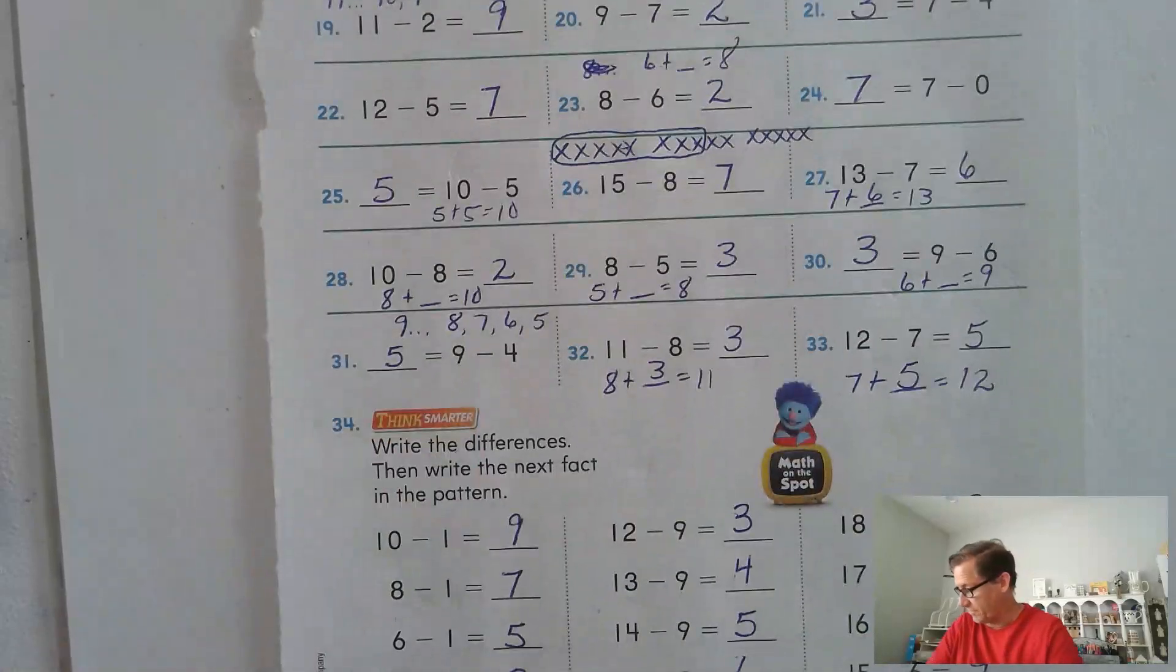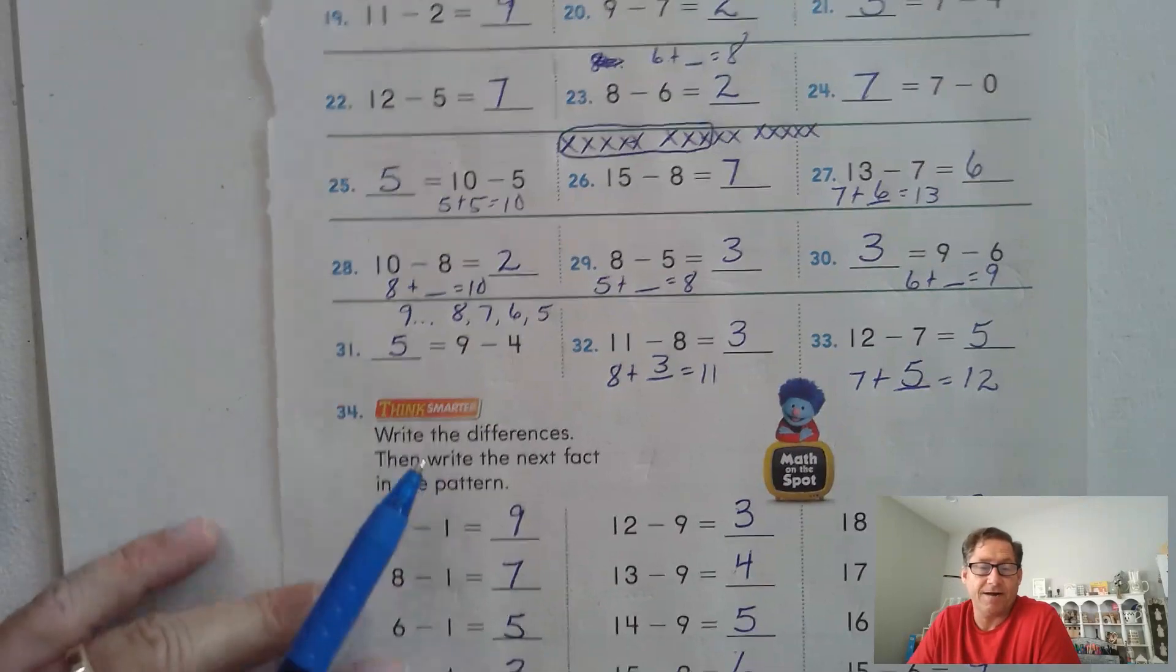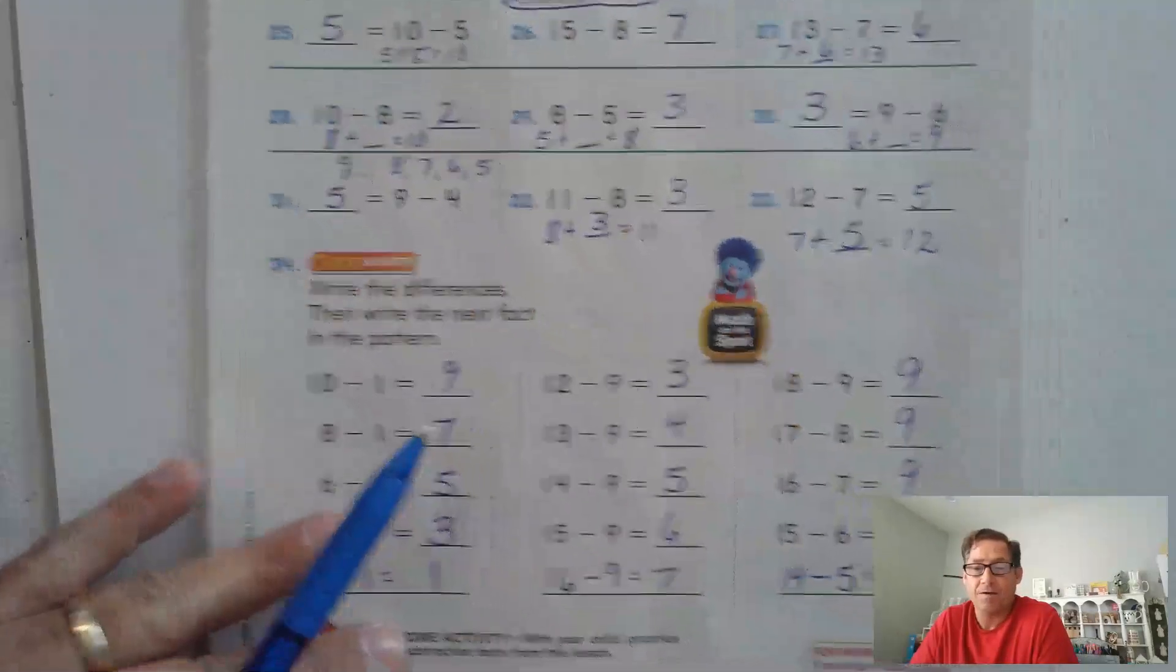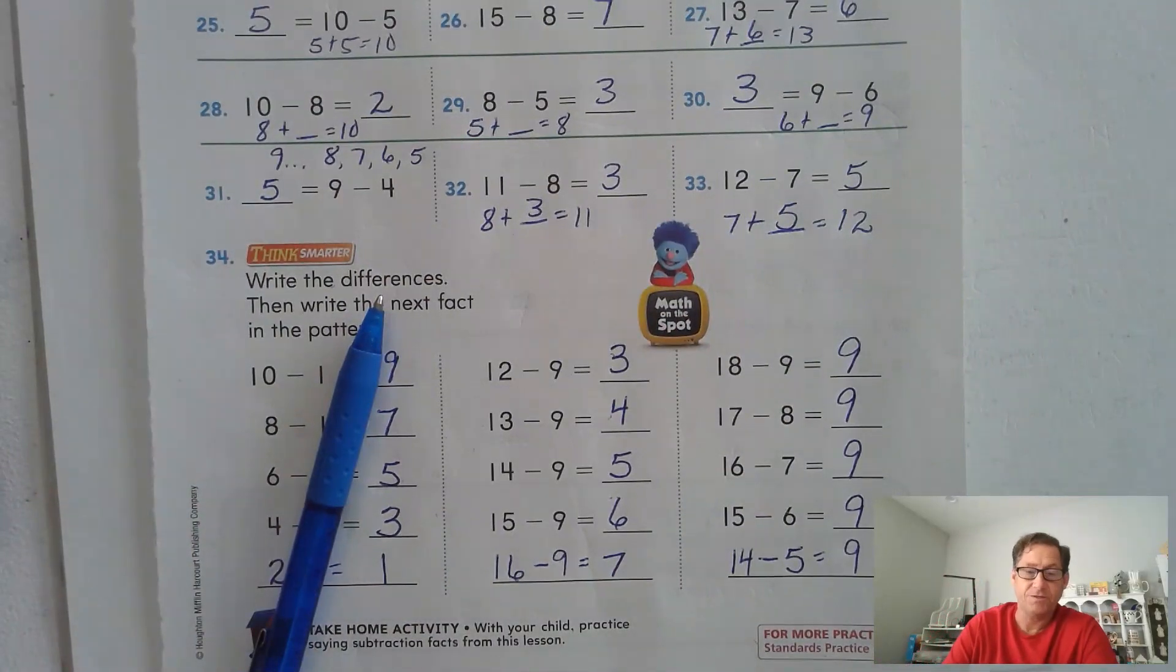Let's look at page 144. So 144 is actually a mid-chapter checkpoint. So our last question on page 143 was writing the differences and writing the next fact in the pattern. So until our next lesson, I will see you soon.